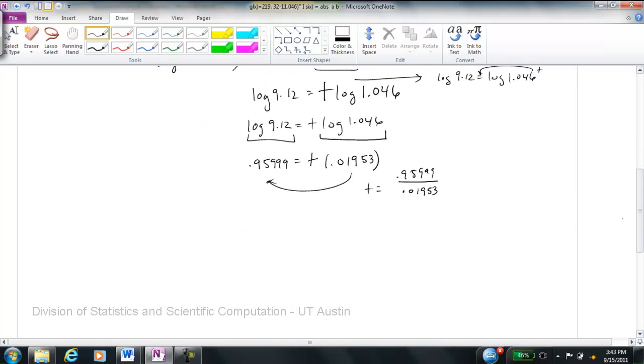And all of a sudden, I see that t is equal to 49.15. So the time at which I'm going to have 2,000 cells in my petri dish is roughly 49 to 50 hours.